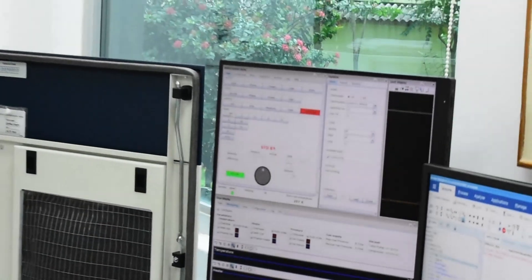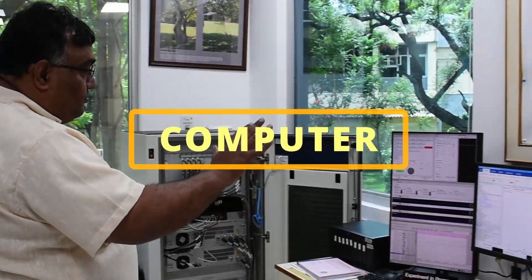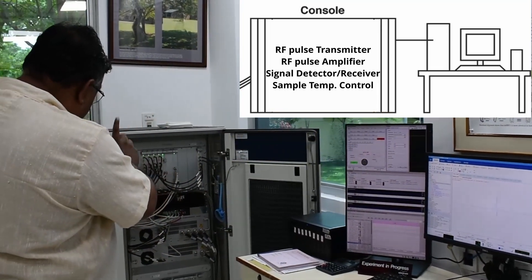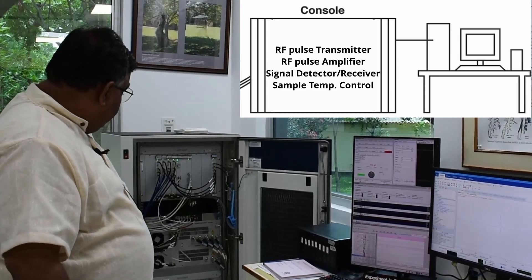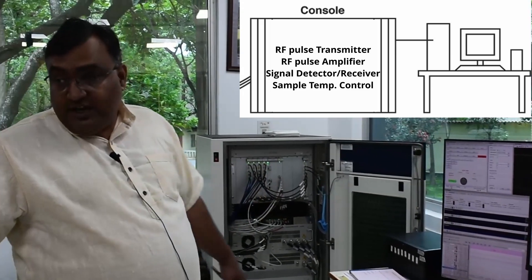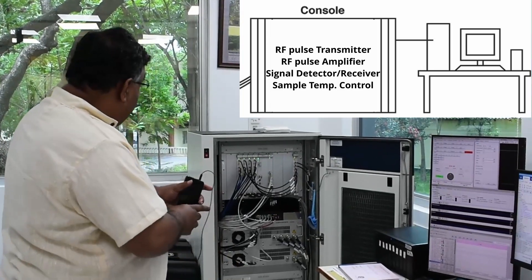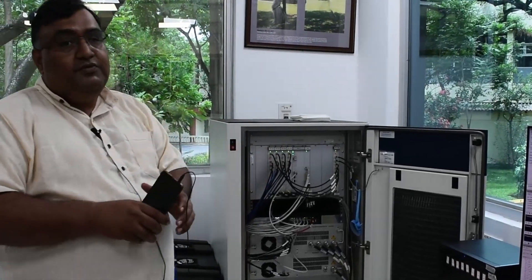So we have a magnet, we have a probe, and we have a console. Now the other component is this computer. This computer not only controls what radio frequency to be given, how it is to be given, how to control the shim systems, how to control the amplifiers, but it also controls the temperature of a sample. And that happens through a unit which previously used to be in the front, now it has gone in the backside. This is called as BVT. Now BVT's role is to ensure that your sample is at room temperature.